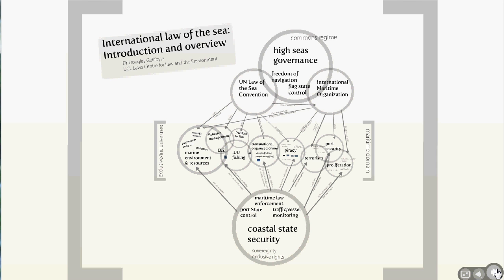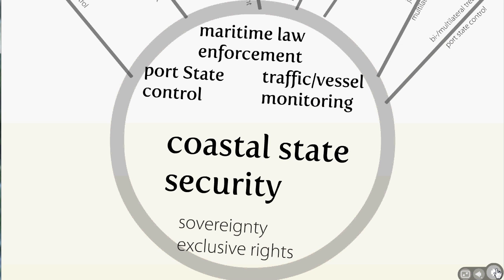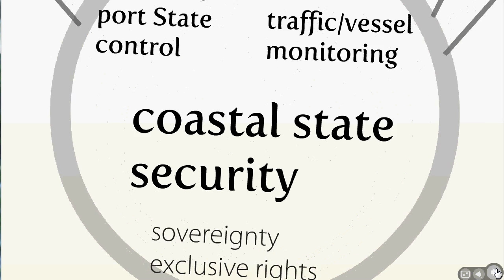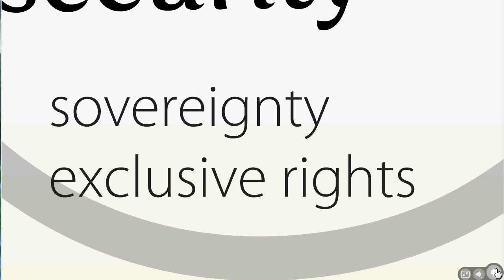So we have this area — the maritime domain — the two-thirds of the Earth's surface that is covered by water, and we have very different interests at play. At one end of the spectrum, we have the coastal state, which is going to be very interested in its security. It's going to want control over the vessels that come into its port, to enforce its maritime laws off its coast in areas like drug smuggling, fisheries management, and resource exploitation. And it's going to be interested in monitoring what vessels are off its coast, claiming sovereignty and exclusive rights, particularly in areas such as fisheries and resources in the continental shelf.